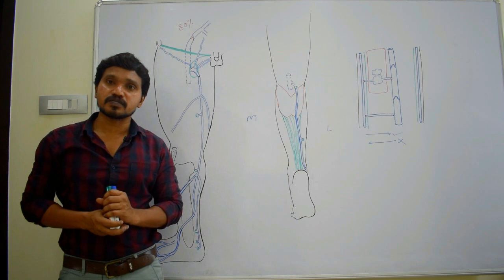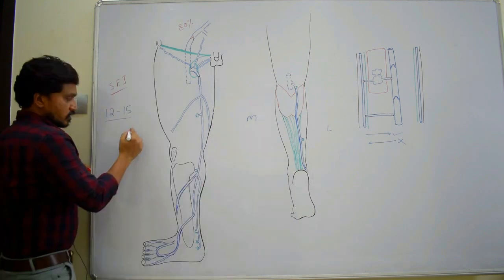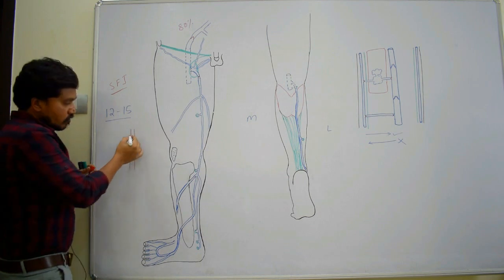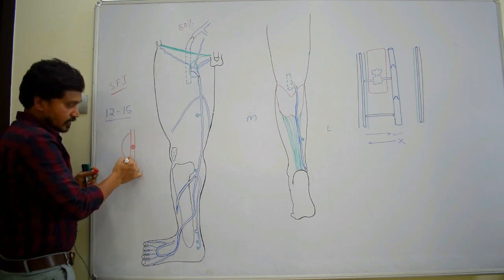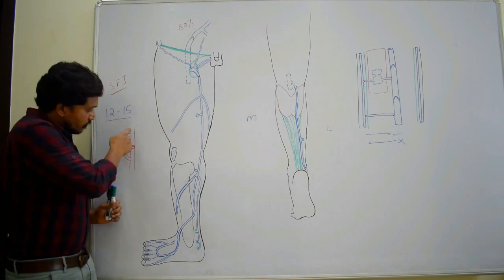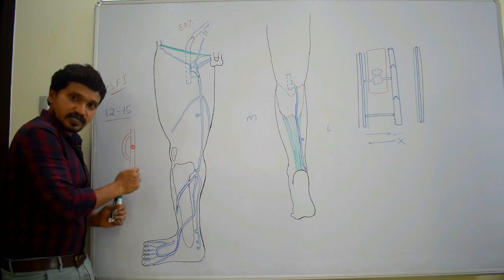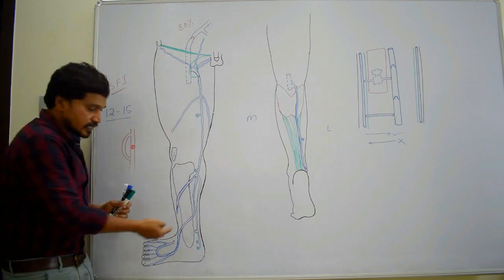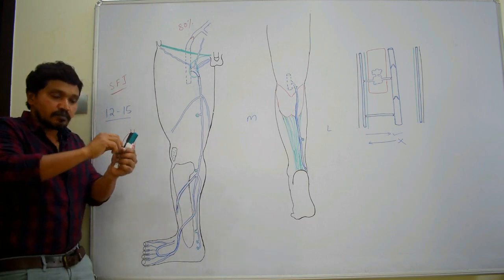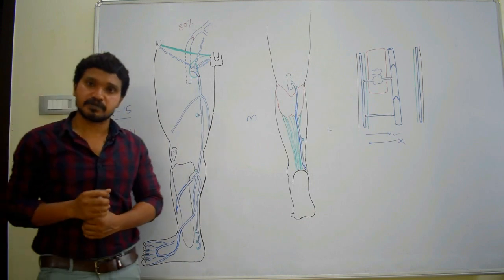Another important application: in coronary artery bypass surgery, when bypassing a block in the coronary arteries, the great saphenous vein is used as a graft. However, it is used in reverse (inside out) because the vein contains valves which would otherwise obstruct flow in the graft orientation.